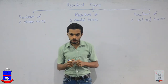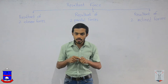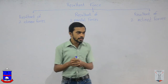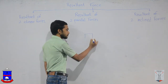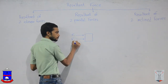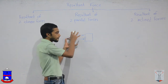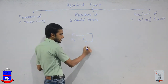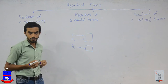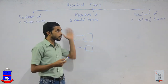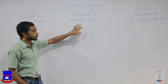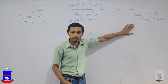Today we are going to talk about resultant force. Resultant force is the single force that can give the same result as two or more forces combined. Resultant force can be divided into three types: resultant of two collinear forces, resultant of two parallel forces, and resultant of two inclined forces.